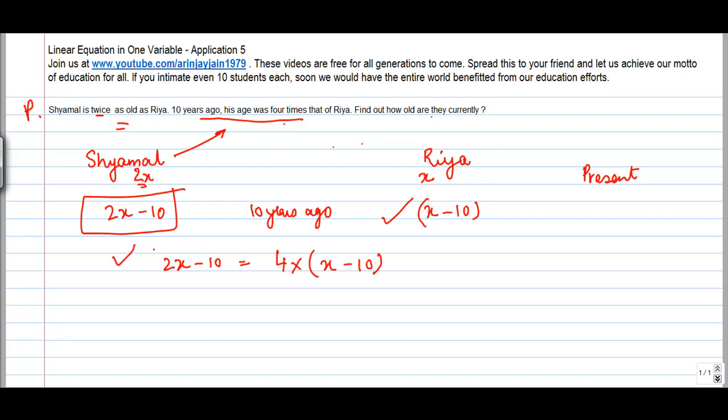And from here everything becomes simple. So we get 2X minus 10 is equal to 4X, minus 10 will give me minus 40.